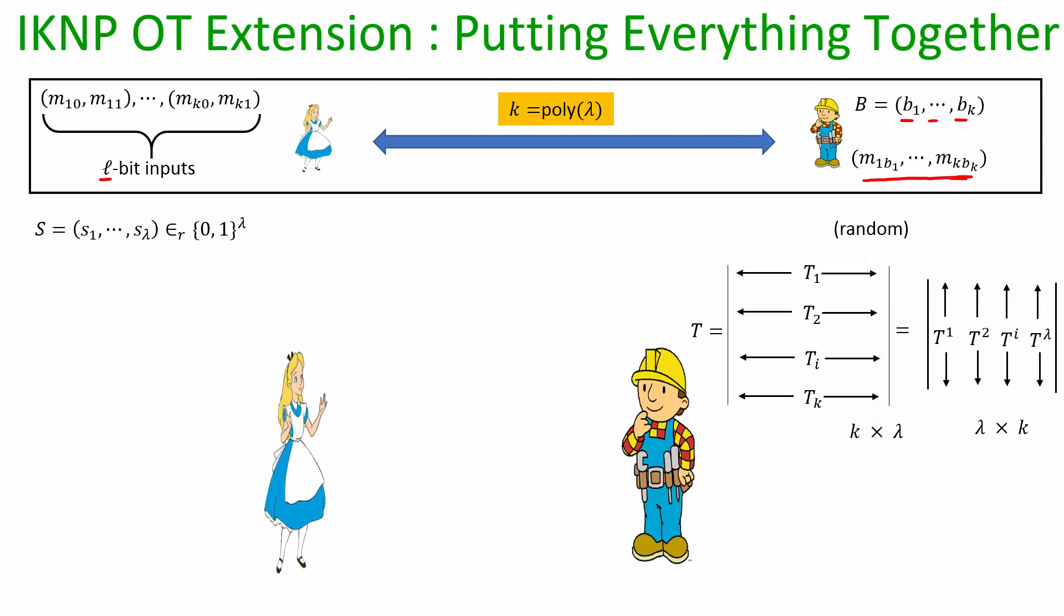Even though Bob is the receiver here we actually let Bob play the role of sender for the following inputs. He picks a random matrix of bits call it T which has k times lambda number of random bits. In terms of rows we have k rows each of size lambda bits, and in terms of columns we have lambda columns each of length k bits. The superscript interpretation is the column interpretation, subscript interpretation is the row interpretation.